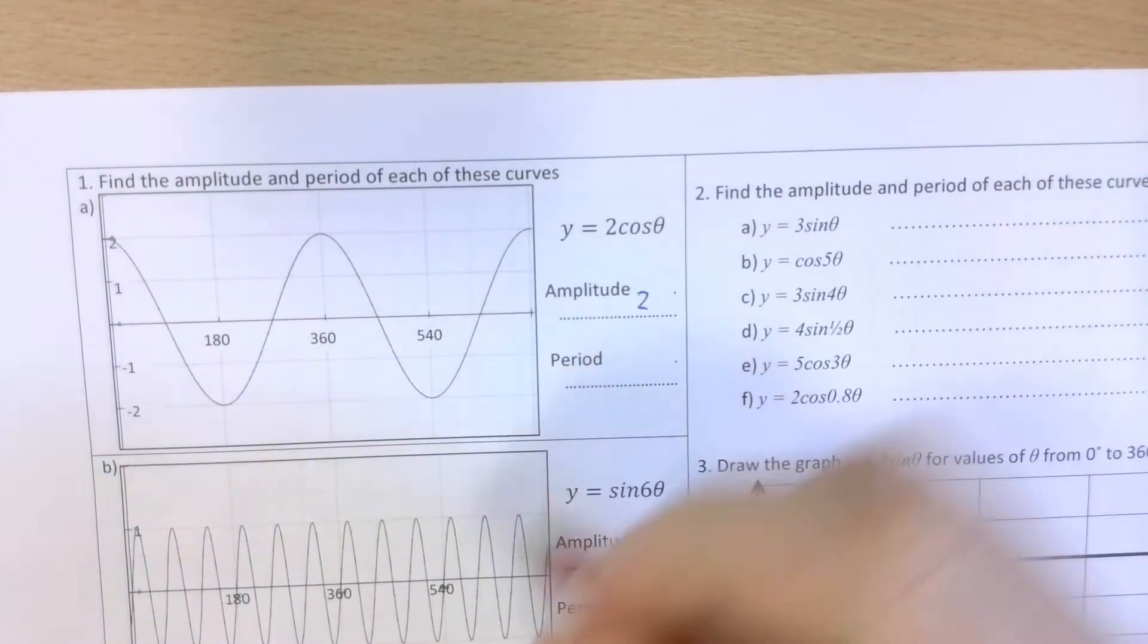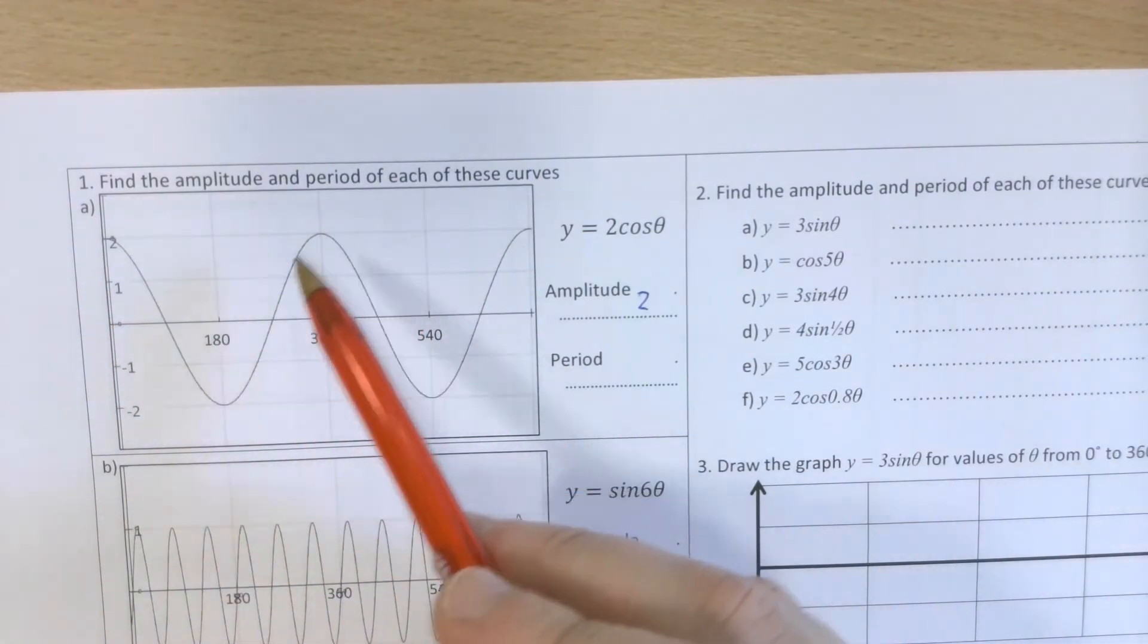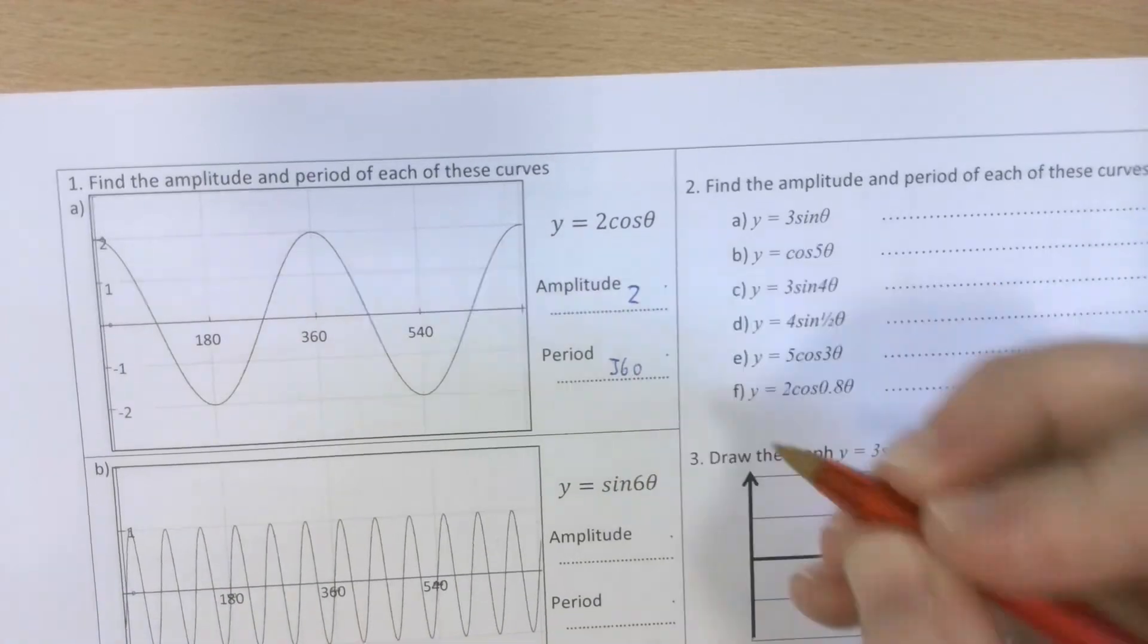The period is what's one repetition of the pattern between? Well, this one's 360.